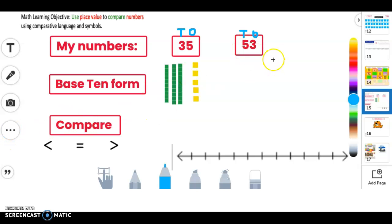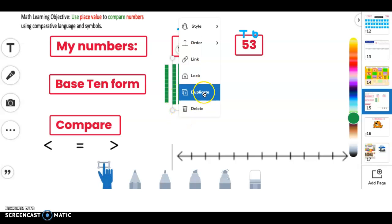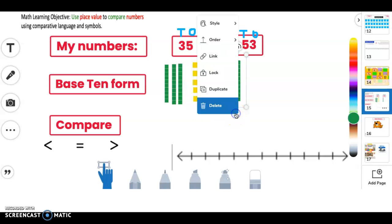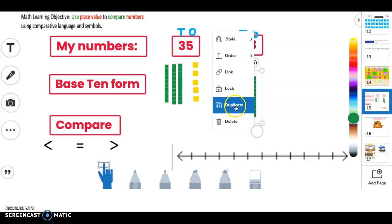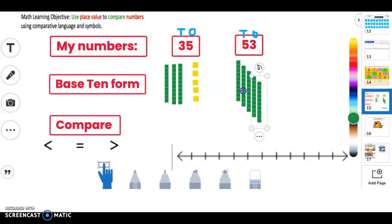So now I'm going to represent the number 53 using base 10 blocks and what I can do—I can actually just hit my three dots here and duplicate it. That means it'll just keep on copying it. So I'll just one, two, three, four, five. I'll make them up here so it can be nice and straight.